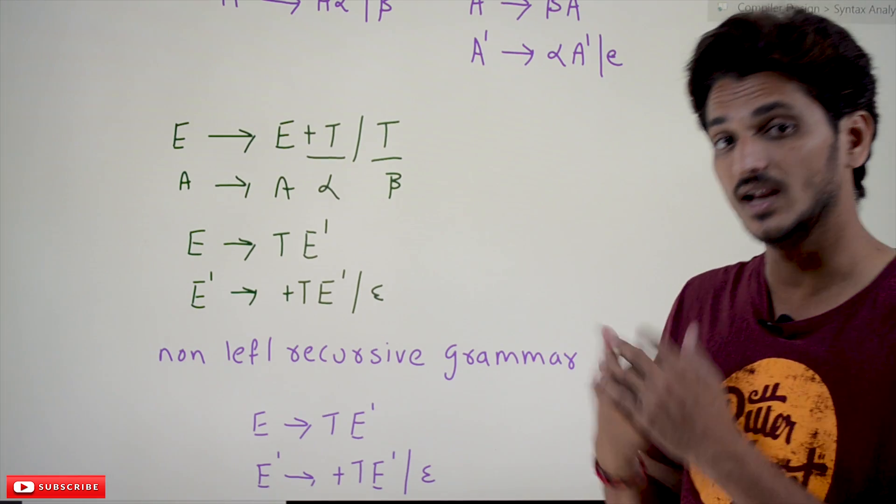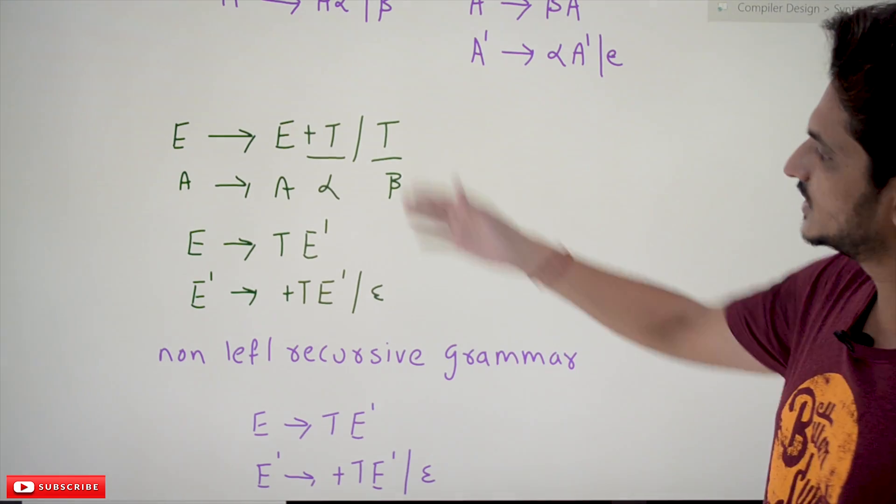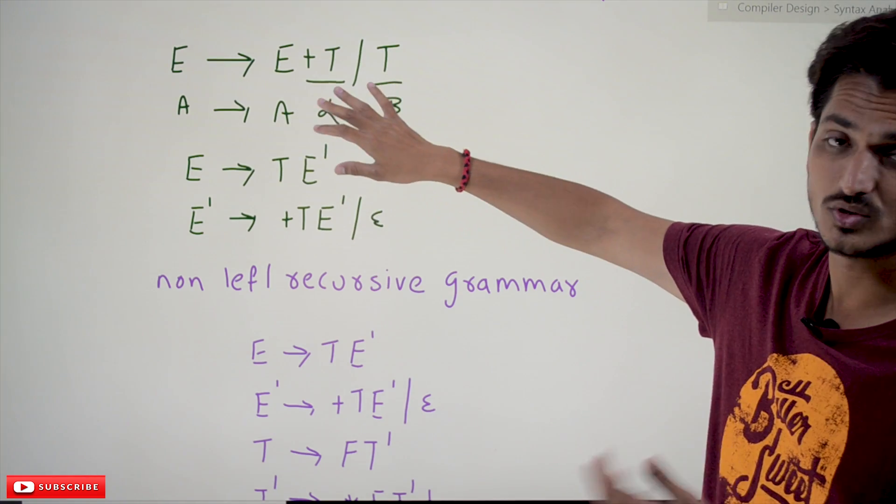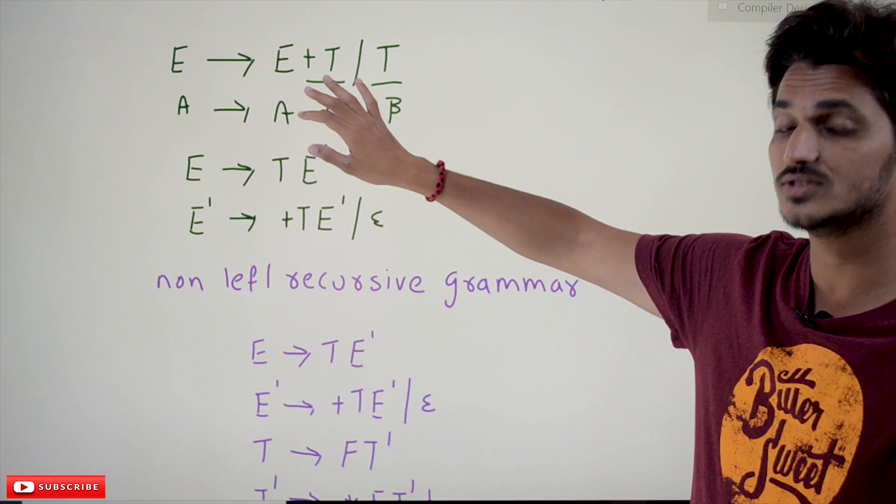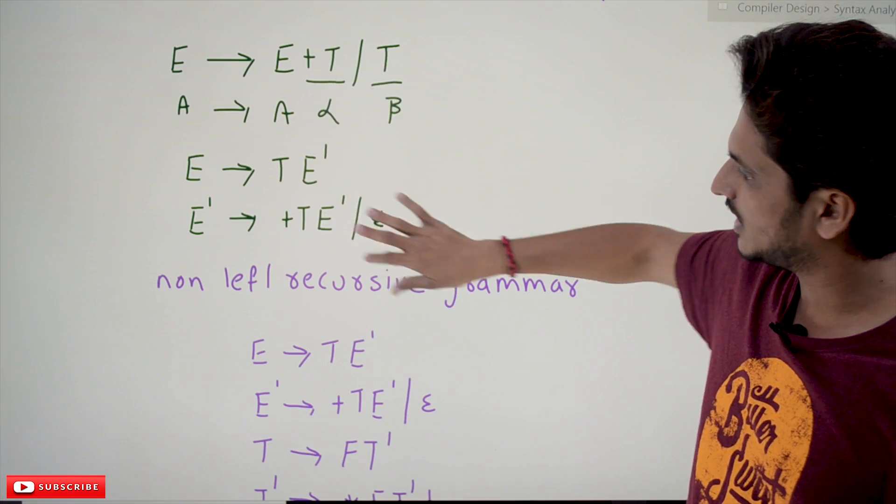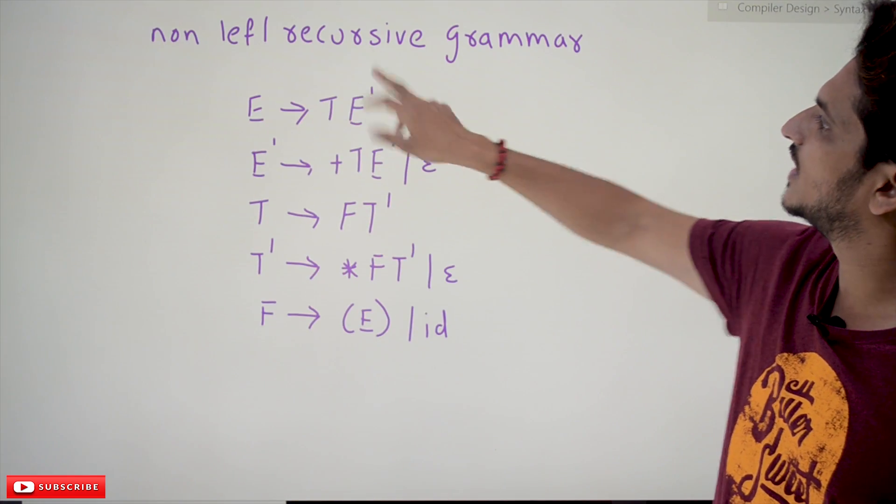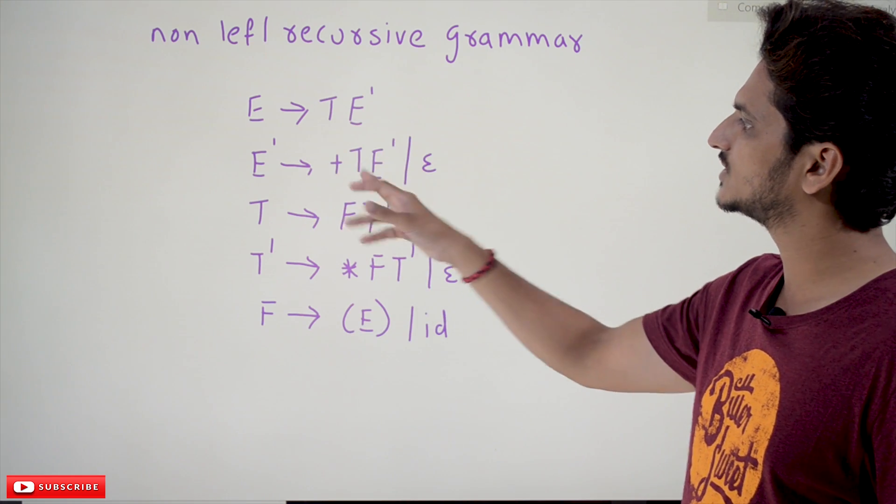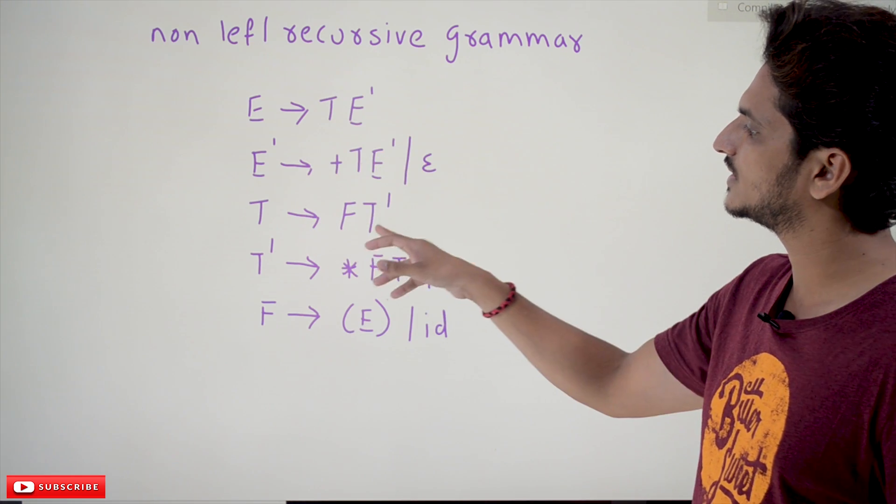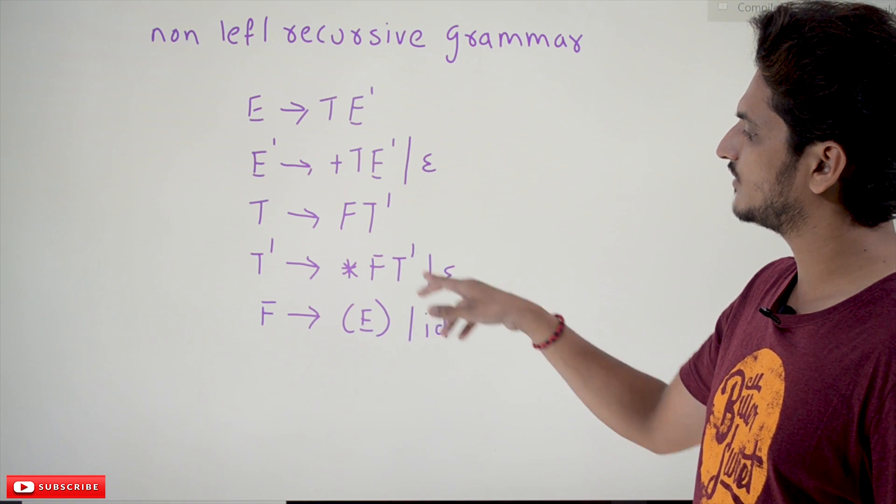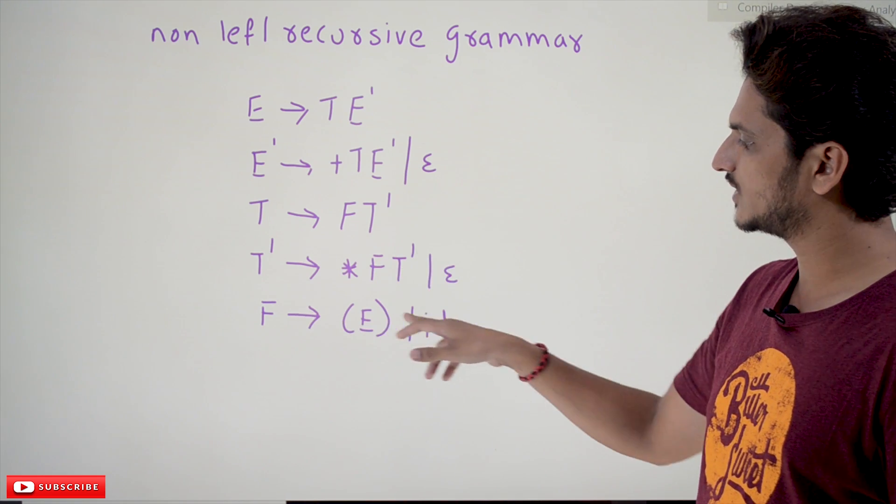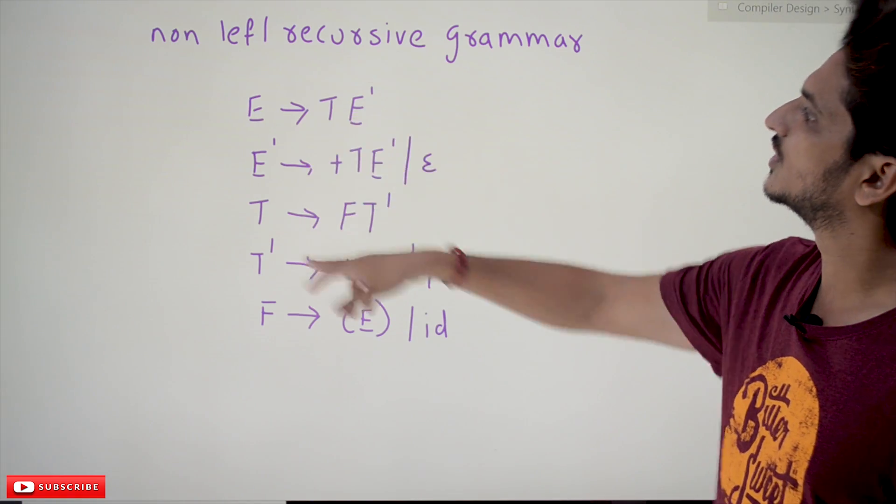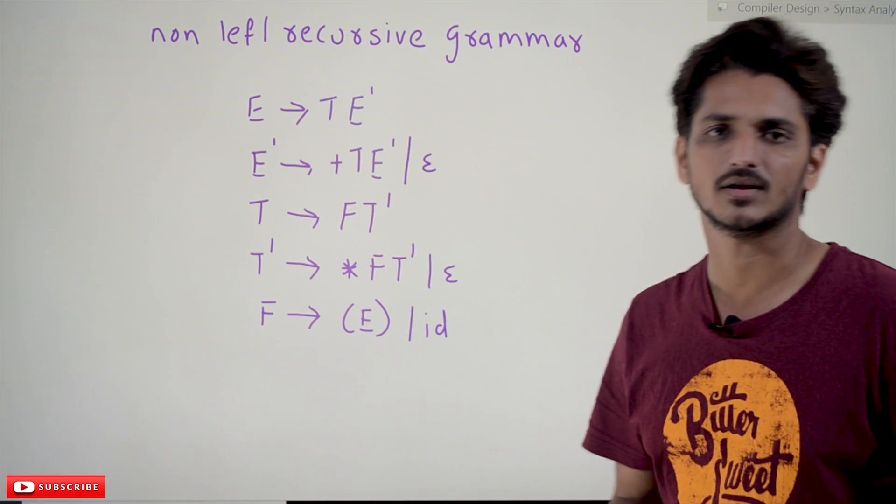After doing this conversion (we are not explaining how to do this conversion, this we already discussed in our Theory of Computation class playlist), after eliminating, this is how the non-left recursive grammar looks like: E tends to T E dash, E dash tends to plus T E dash or epsilon, T tends to F T dash, T dash tends to star F T dash or epsilon, F tends to E or id.